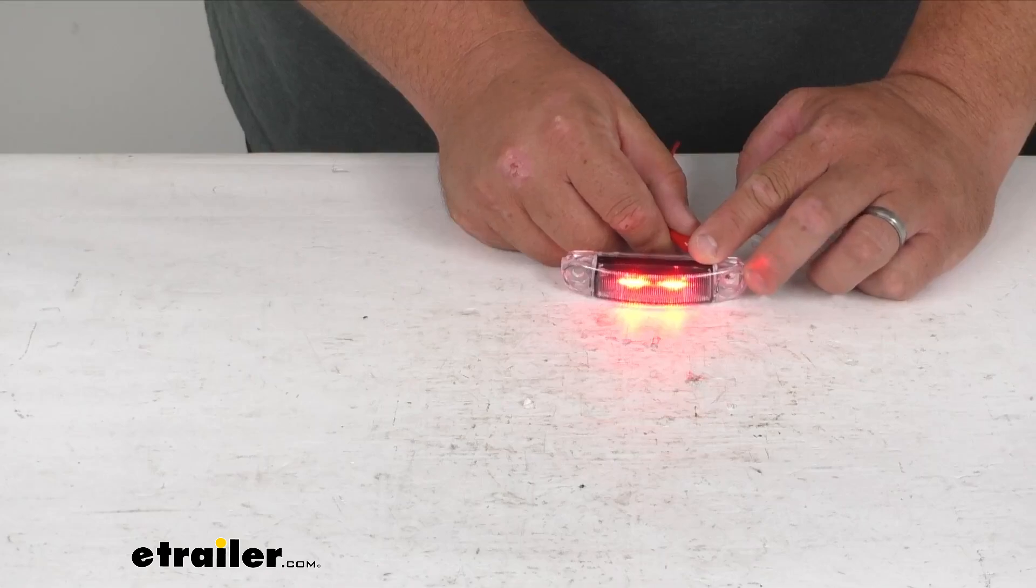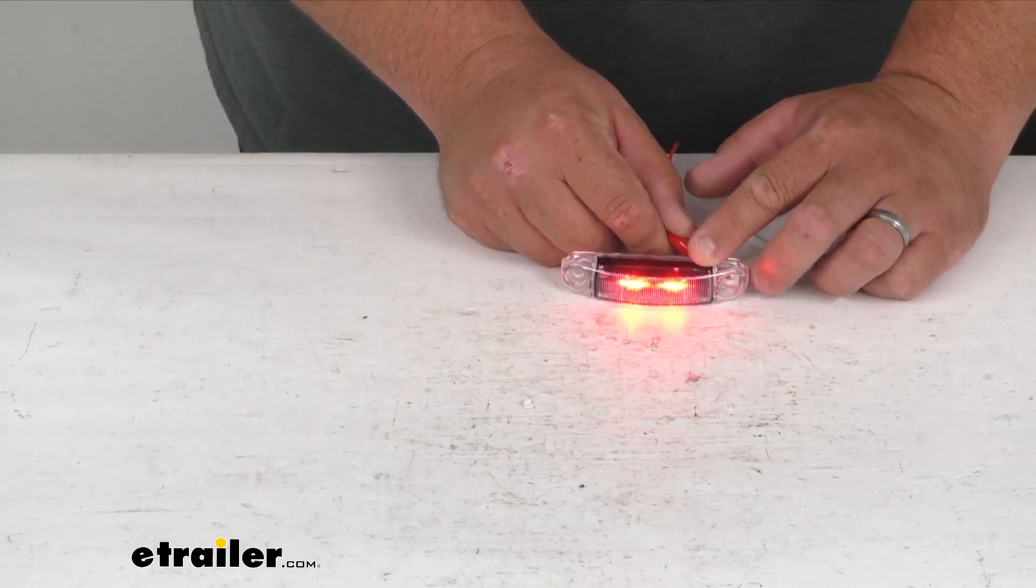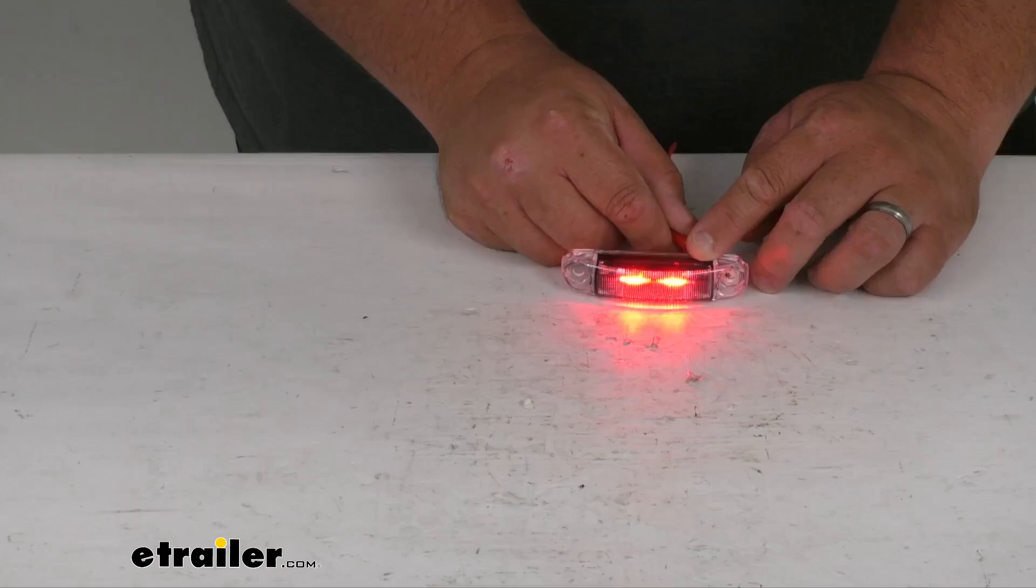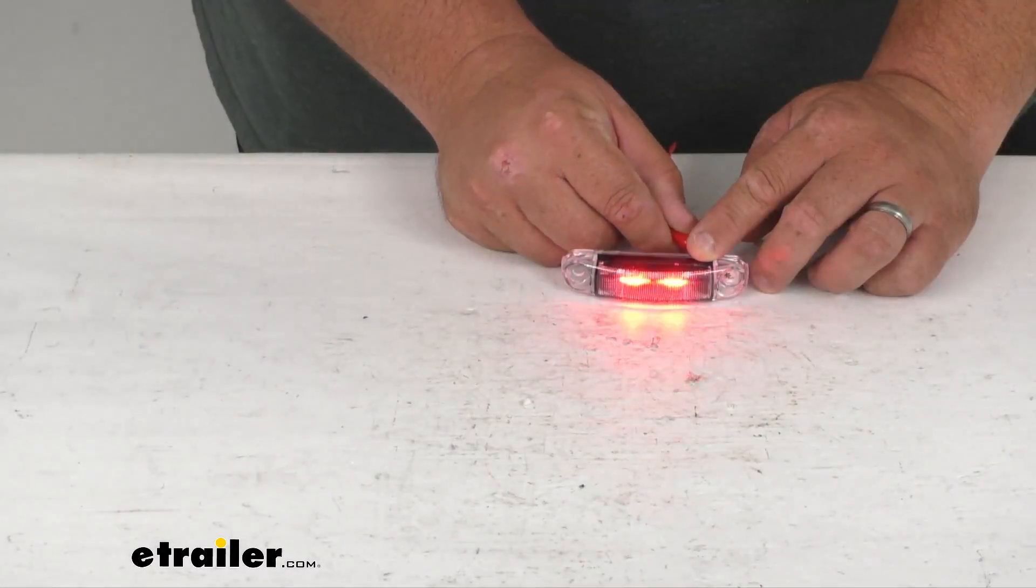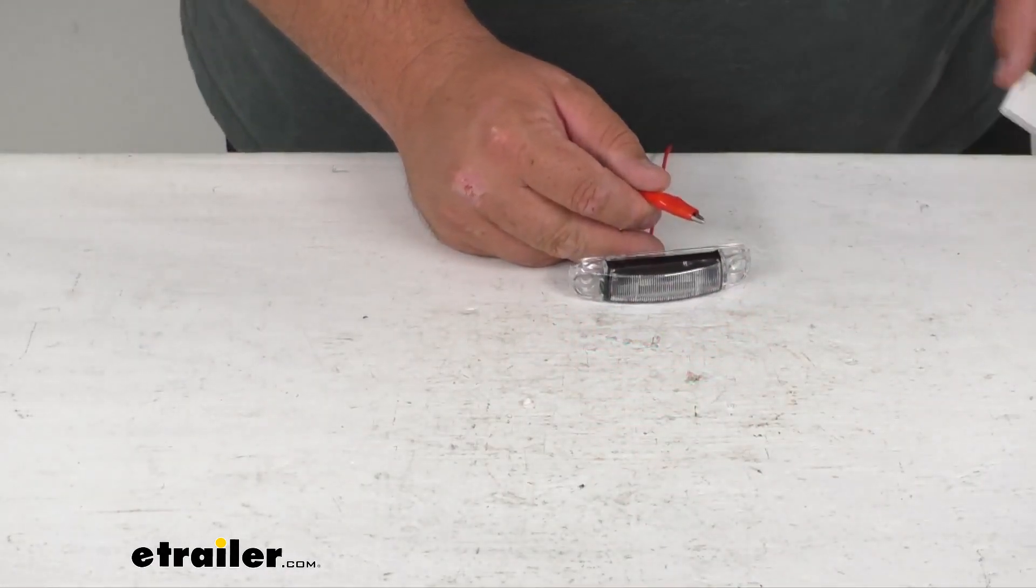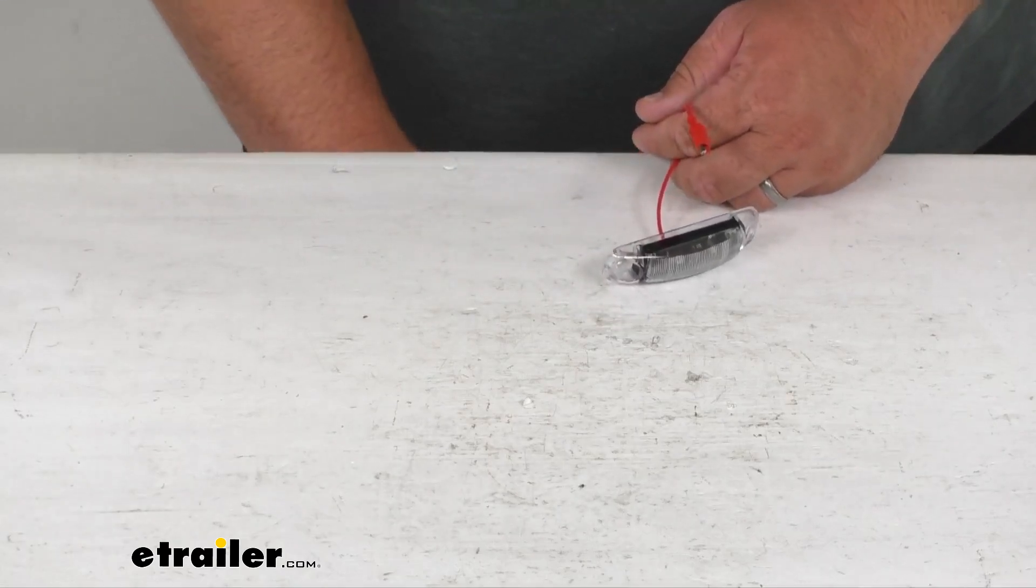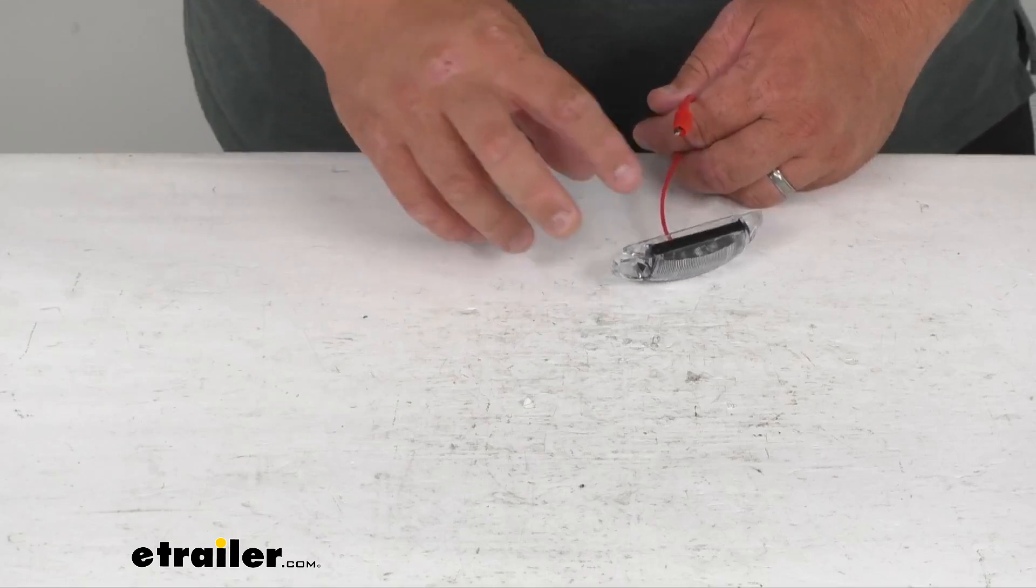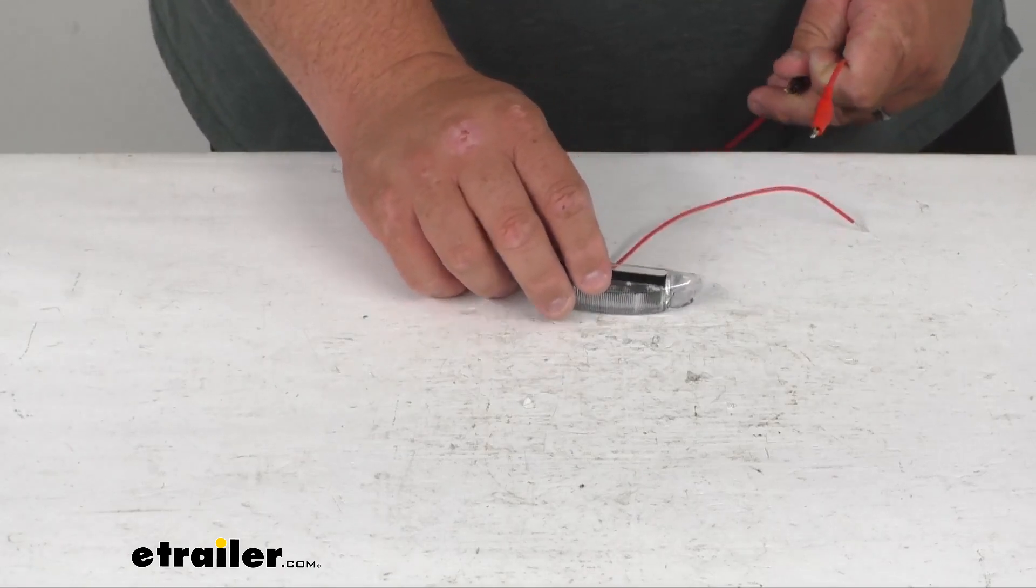I'm just going to flash it to show you, and then back in the daylight. So again, nice little clearance or side marker light - this is the LED with two red LEDs and a clear lens.